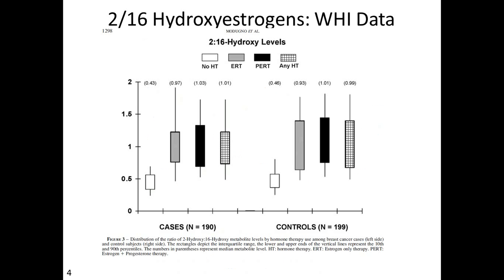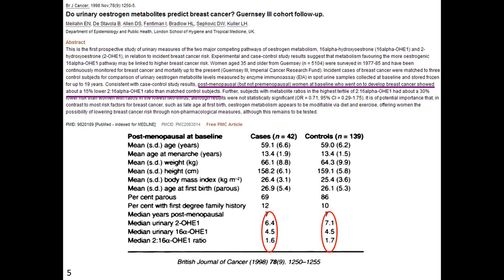If we look at data from individual studies, we can see just how unimpressive this ratio is with respect to breast cancer risk. Here is the data from the WHI study — women on no hormone therapy, here are your cases, here are your controls, and there's really not a lot going on in terms of a distinction between cases and controls. If you look at all the hormone therapy combined, cases pretty much fit within the range of results for controls, so there's really not a lot going on in terms of it being indicative of risk for breast cancer.